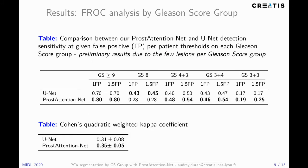Both tables here compare U-Net and Prostate Attention Net performance at Gleason score group level. We can observe that our model outperforms U-Net in terms of sensitivity, and it also has a higher Kappa score.